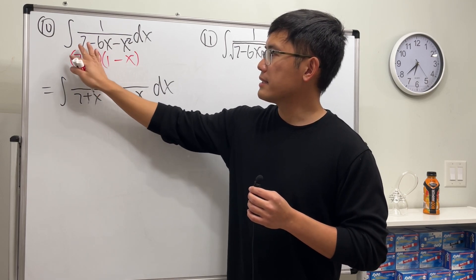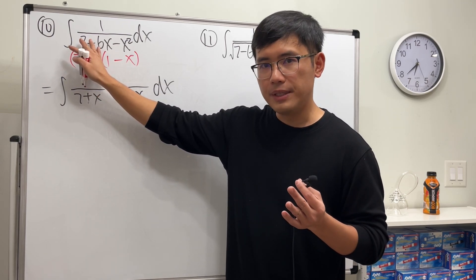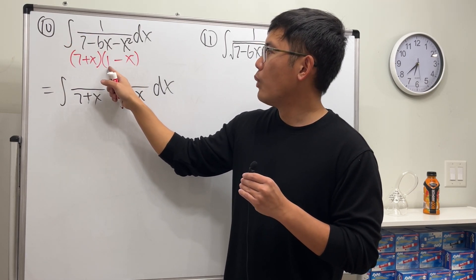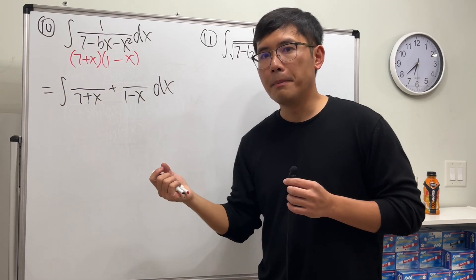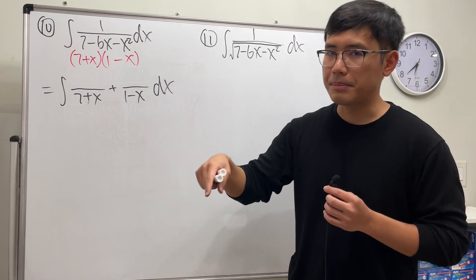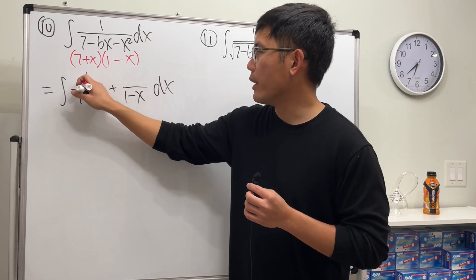To make 7 plus x equals 0, x has to be negative 7. Put negative 7 in here: 1 minus negative 7 is 1 plus 7, which is 8. That's on the bottom though, so we get 1 over 8.